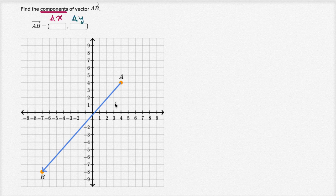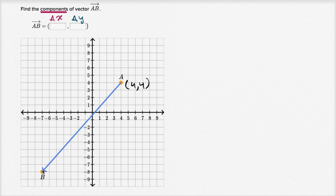And to think about that, let's just think about what our starting and final points, our initial and our terminal points are. So this point right over here, point A, its coordinates are four comma four. And then point B, its coordinates are negative seven comma negative eight. So let's first think about what our change in x is.